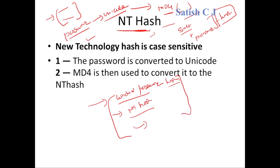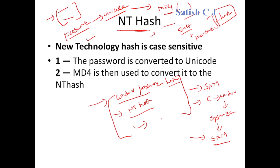Windows actually stores all user account hashed passwords in a database called the SAM database — Secure Accounts Manager. If you go to your Windows system, go to the C drive, then Windows, then the System32 folder, inside System32 you have the Config folder, and inside Config you have the SAM file. This SAM file contains the hashed passwords of your user accounts. For a Windows system with many user accounts, all the passwords are hashed and stored in the SAM database at C:\Windows\System32\Config.